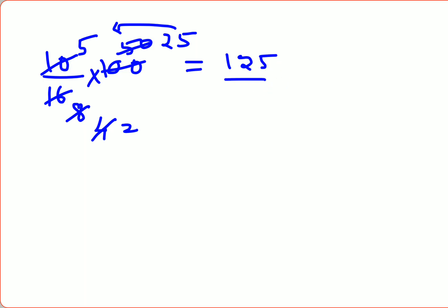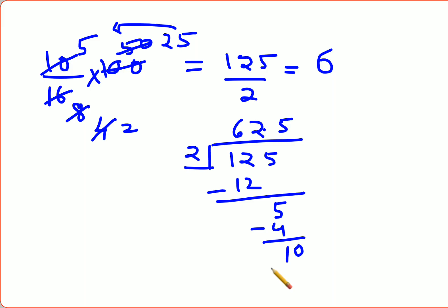125/2 - when you do the division, 2 goes into 12 six times, leaving 5, so you get 62 point 5.